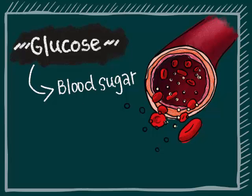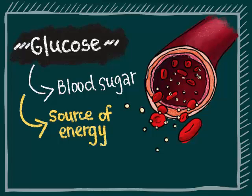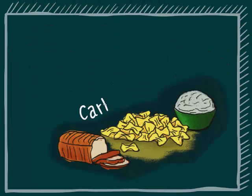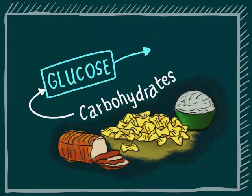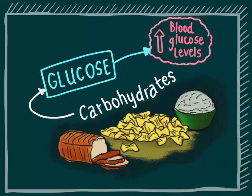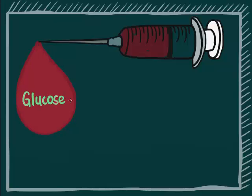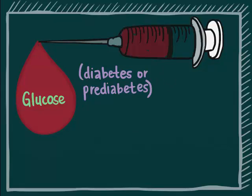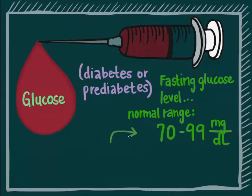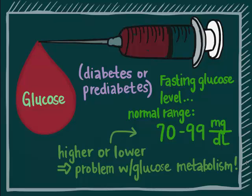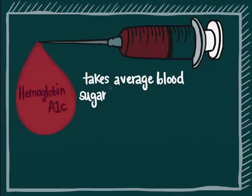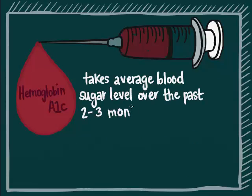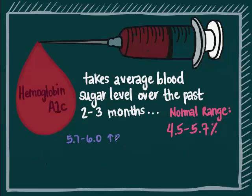Glucose, or blood sugar, is a source of energy for the cells in your body. Foods such as bread, pasta, rice, and fruit contain carbohydrates that are turned into glucose in your body, raising your blood glucose level. For fasting glucose level, the normal range is 70 to 99 mg per deciliter — too high or too low a level indicates a problem with your glucose metabolism. Hemoglobin A1C is a more meaningful test for screening for diabetes, checking your average blood sugar level over the past 2 to 3 months. The normal range is 4.5 to 5.7%. A result of 5.7 to 6% suggests increased risk of diabetes, 6.1 to 6.4% suggests higher risk, and greater than 6.5% is consistent with diabetes.